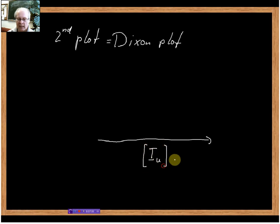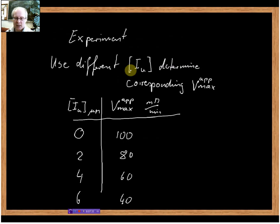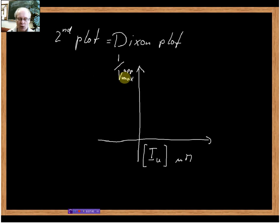We plot our inhibitor concentration on the x-axis in micromolar. On the y-axis, we do something very funny - we don't actually plot Vmax apparent, we plot the inverse, 1 over Vmax apparent.